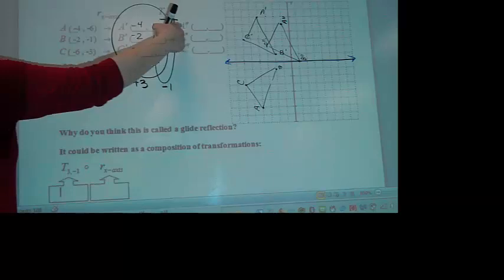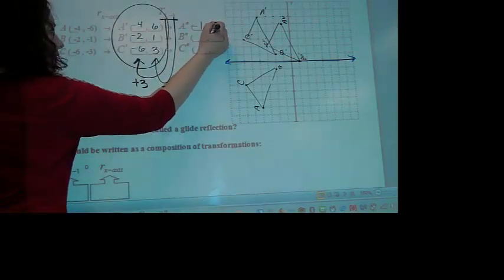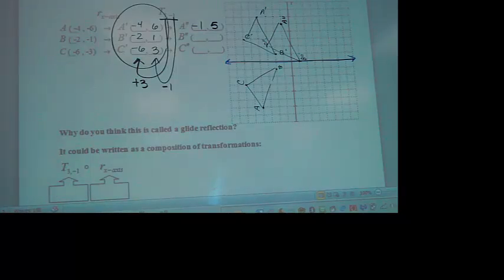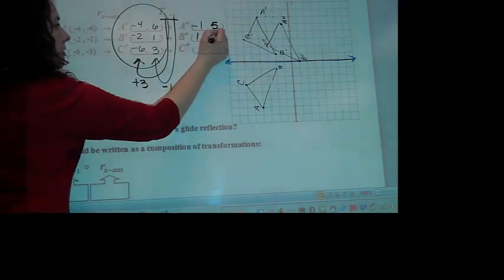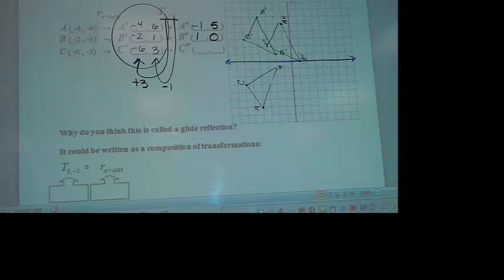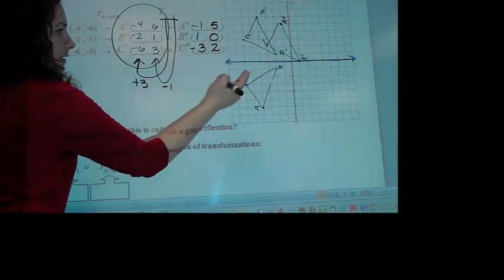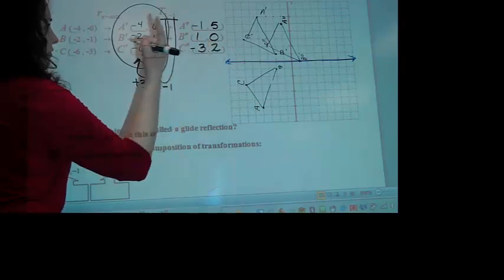What did you get for A double prime? Negative 1, 5. That sounds good. I think I even have negative 1, 5 as my point. What did you get for B? 1, 0. That's what I got for my B. What about for C? Negative 3, 2. Perfect.